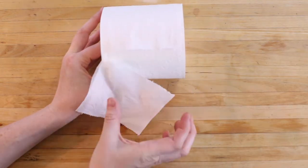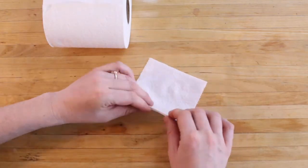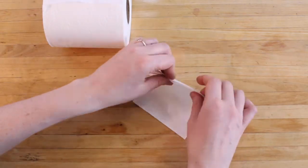Begin by tearing off one square. Now you'll fold the square accordion style, making each fold about a half inch.